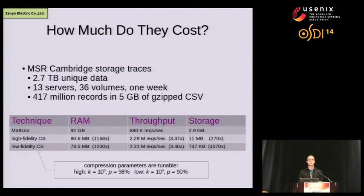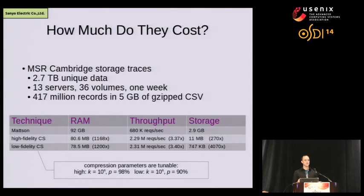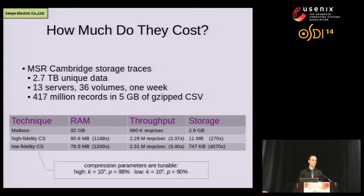How much do these things cost? We've reduced memory overhead significantly. We can compute MRCs in 80 megabytes of RAM for the MSR Cambridge workload that touches 3 terabytes of data, where before we needed 92 gigs of RAM. The on-disk representation is also quite sparse: the original MSR workload comes in at about 5 gigs of gzipped CSV files, reducible to 3 gigs in binary format. But our counter-stack stream can be saved in just 1 to 11 megabytes of disk space — making it reasonable to perform these computations online and save months or even years of storage history.